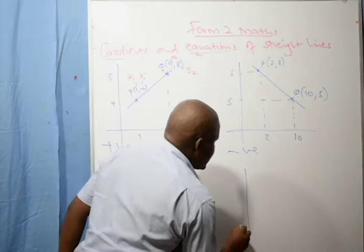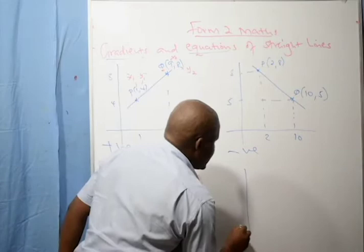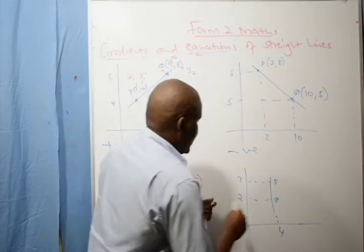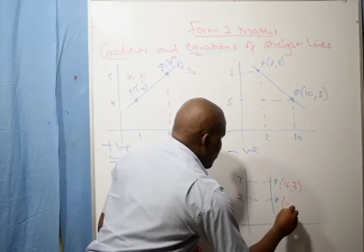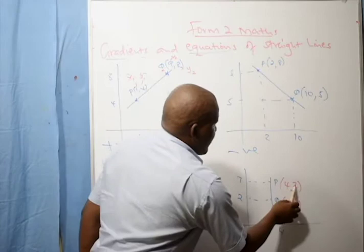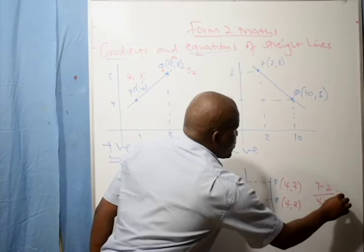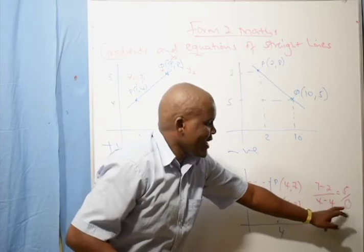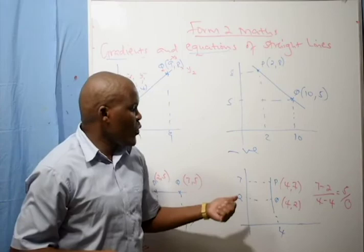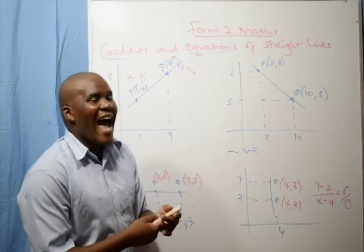The last line is a line parallel to the Y-axis — a vertical line. Here we assume x is 4, with point P as (4, 7) and Q as (4, 2). Change in Y over change in X gives 7 minus 2 over 4 minus 4, which is 5 over 0. Mathematically, 5 over 0 is infinitely large — a number we cannot express — so we say the gradient for a line parallel to the Y-axis is undefined.